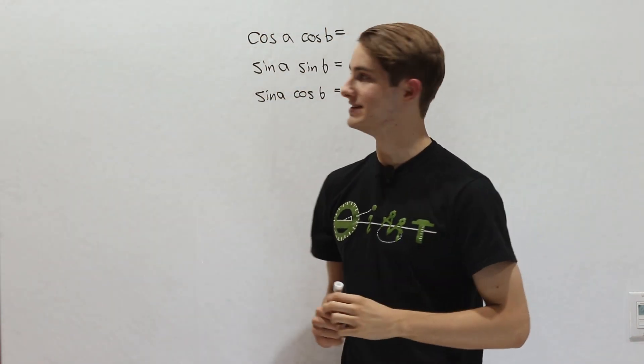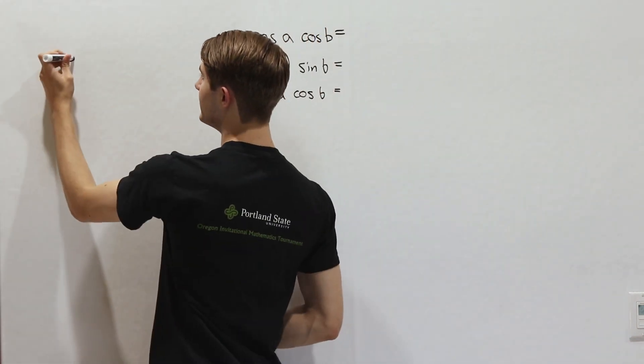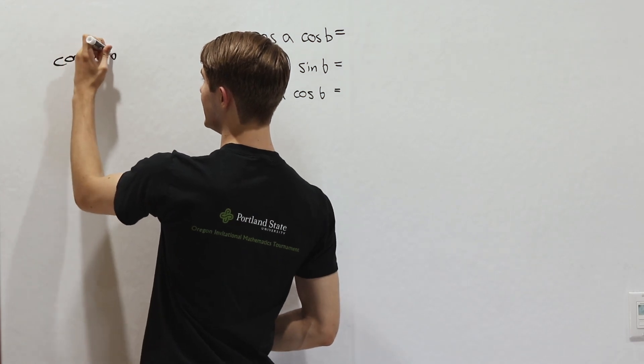In order to do that, we're going to take a look at the angle sum identities for sine and cosine. Let's start out looking at the cosine of a plus b.